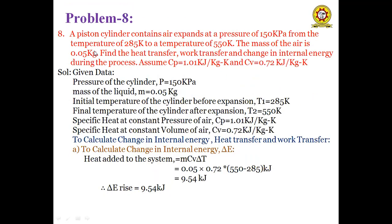Next problem: A piston-cylinder contains air expanding at a constant pressure of 150 kPa from a temperature of 285 K to 550 K. The mass of air is 0.05 kg. Find heat transfer, work transfer, and change in internal energy. Assume Cp = 1.01 kJ/kg·K and Cv = 0.72 kJ/kg·K.